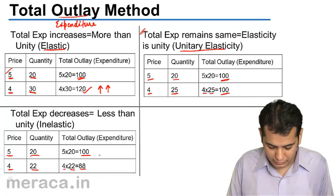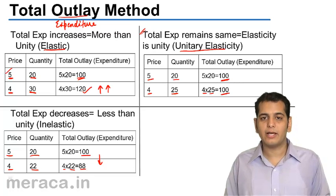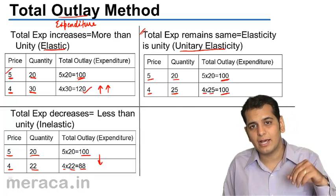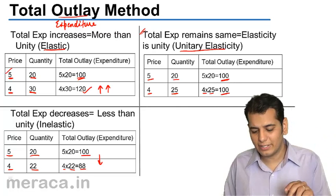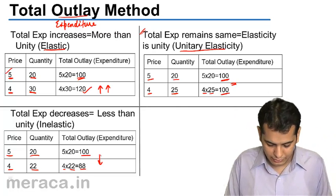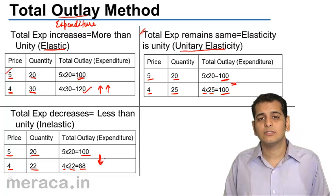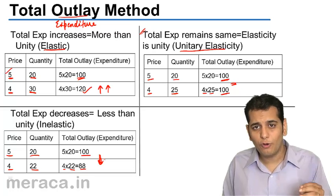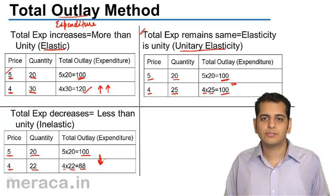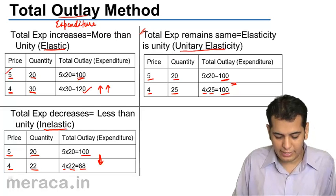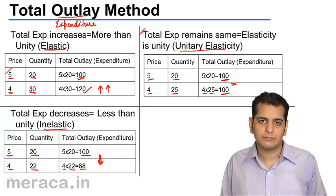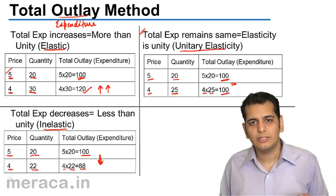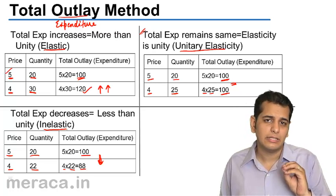My total outlay has fallen. In the first case it had risen, in the second case it was constant, and here the total outlay has fallen. When the total outlay falls because of a change in price, we call the elasticity of demand inelastic.